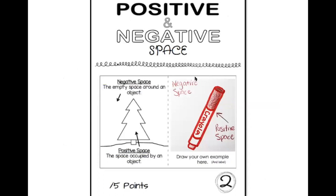On page two, you're going to create an example of positive and negative space. I've created one for you. Remember, positive space is the object, negative space is the area around the object. You're going to draw any object. My example is a marker, then label the positive space as the marker and the negative space as the area around the marker.